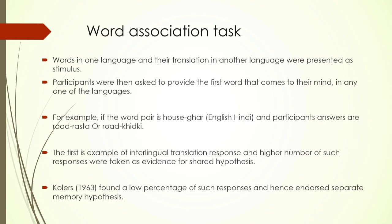Similarly, word association tasks used words in one language and their translations in another as stimulus. Participants were asked to provide the first word that comes to mind. For example, 'house' and 'ghar' — the participant might respond with only 'road', or with 'rasta'. If after hearing 'ghar' they produce 'khirki', this is intralingual processing within the same language. However, if they produce 'road' and 'rasta' as a translation pair, this is an interlingual translation response — evidence for a shared hypothesis, since the participant crosses languages freely.